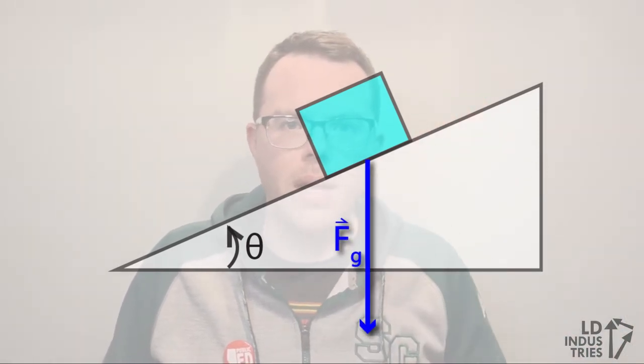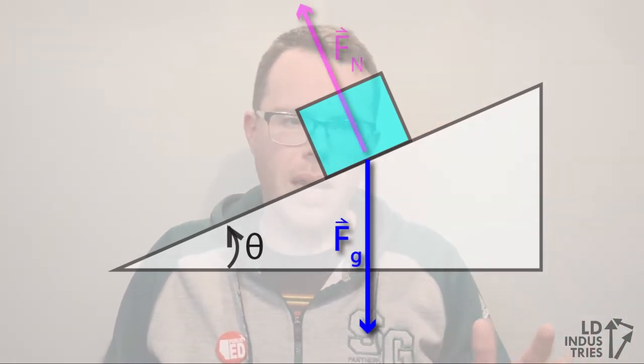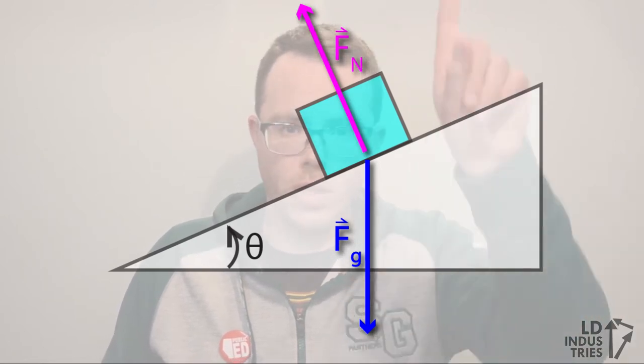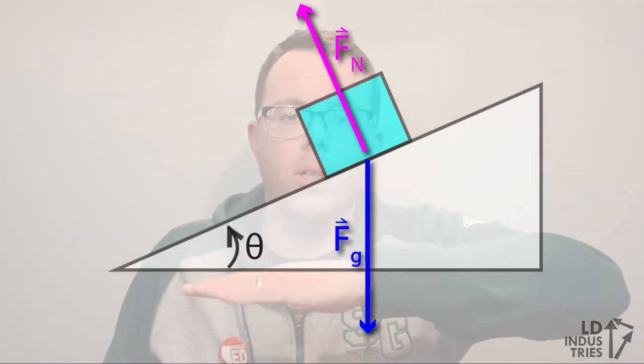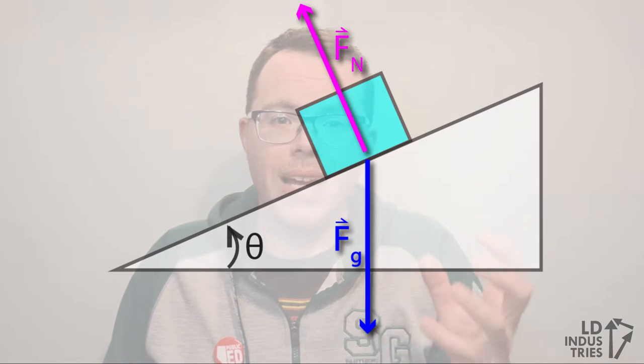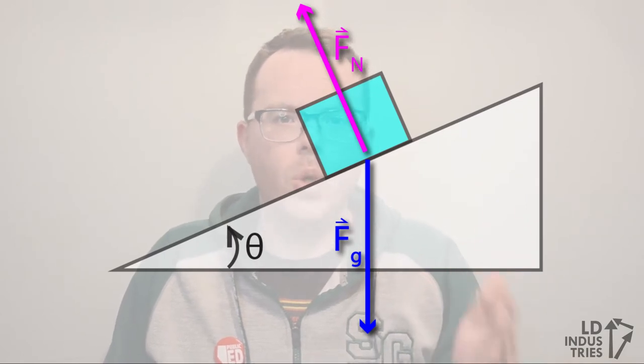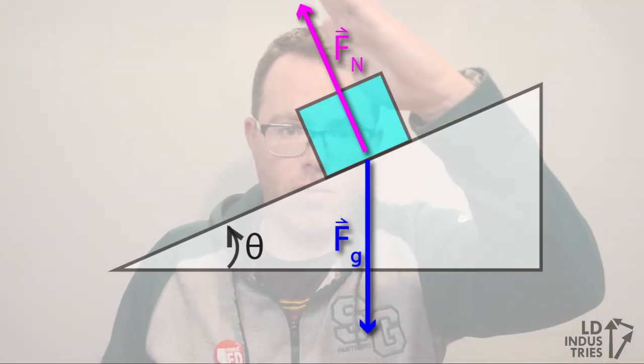Now what are the forces that act on the box? Well, there's a force of gravity acting straight down on the box. There's also a normal force. And we're used to drawing the normal force going straight up when the object's on a horizontal surface, but normal actually means right angle. So we have to make the normal force at a right angle to the surface.